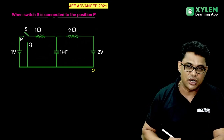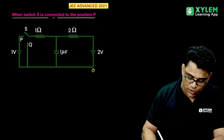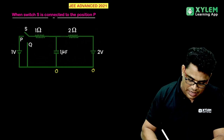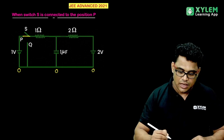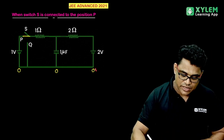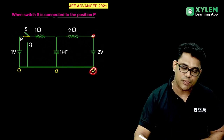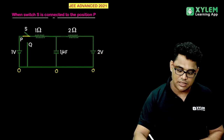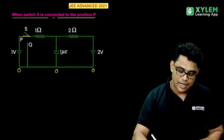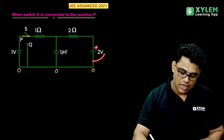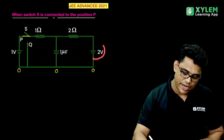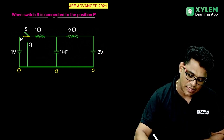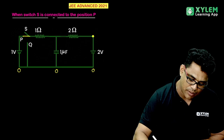The reference potential is 0. The E potential is 0. Switch P is closed. If the bottom node is 0, the potential at the top will be 2, because there is a battery. The potential difference is 2, so the potential at that node is 2.